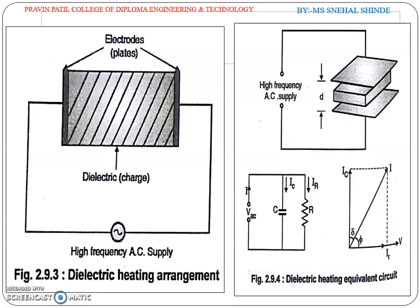Here in the figure, epsilon r delta is called the loss factor. For a given material, it does not vary greatly with frequency. To obtain a given amount of power loss, it is possible to use high voltage and medium frequency supply, and vice versa. However, the breakdown strength of the specimen puts an upper limit on voltage.